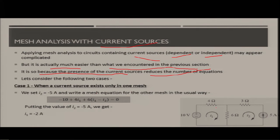With i2 equal to minus 5 amperes known directly, we only need to solve for i1. Writing KVL for loop 1: minus 10 plus 4·i1 plus 6·(i1 minus i2) equals zero. Substituting i2 equals minus 5 gives the value of i1 as minus 2 amperes.